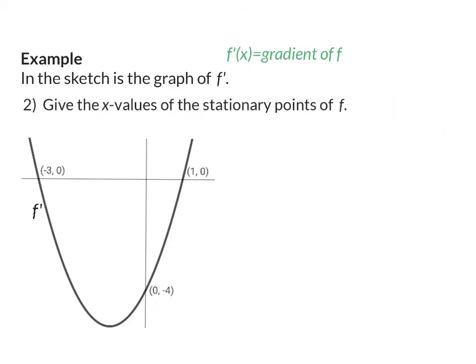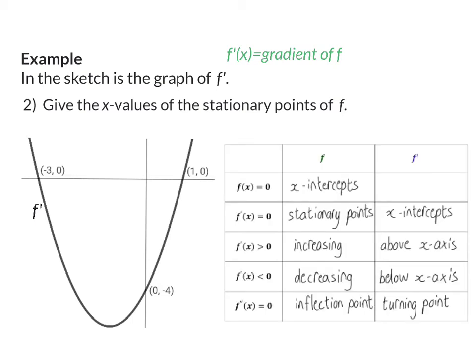Question two: give the x values of the stationary points of f. If you understood the table it is now easy to say that the stationary points of f are indicated by the x-intercepts of the derivative's graph. So because we were given the graph of the derivative we are going to focus on its x-intercepts, and they will indicate the stationary points of f. Therefore the x values of the stationary points of f are at x = minus three and x = one.